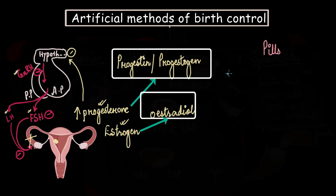So these pills can contain only progesterone, and the example is mini pills. Or as we just discussed, the pills can also have a combination of progesterone and estrogen. They are mainly referred to as combined oral contraceptive pills. And the examples are mala D, mala L, etc.